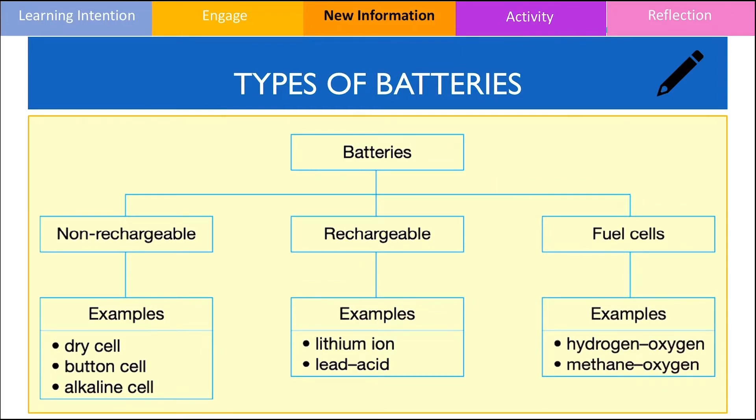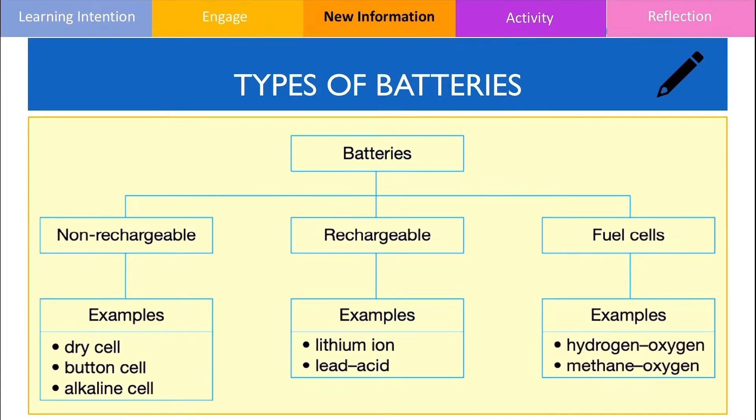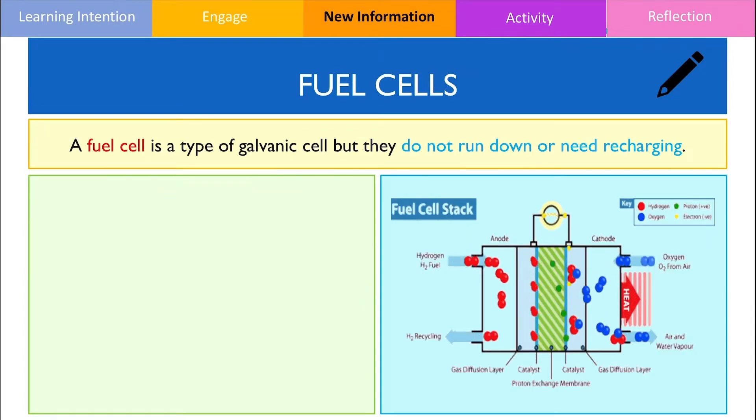The most common fuel cell is the hydrogen fuel cell, which is the type that we'll be focusing on in this video. A fuel cell is a type of galvanic cell, which means it uses redox reactions to convert chemical energy into electrical energy, but is different from a primary and a secondary cell because the battery doesn't get flat over time, nor do they need to be recharged.